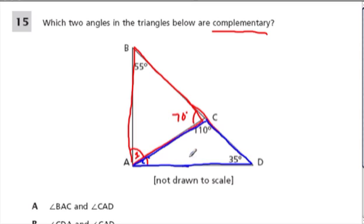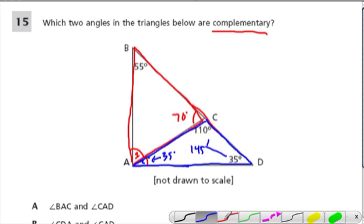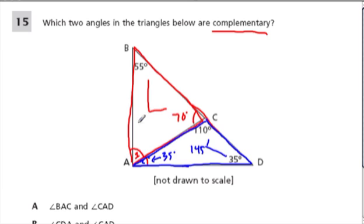Remember that every triangle has to add up to 180 degrees. So here, these two angles — 110 and 35 — is 145. So this angle over here has to be 35 degrees, to go all the way up to 180. What about angle 1? Using a similar principle, we already have 70 and 55 degrees, which is 125 degrees. So angle 1 needs to be 180 minus 125, which gives us 55 degrees.